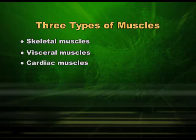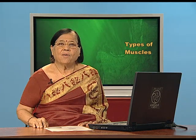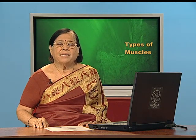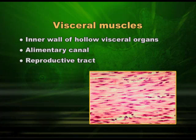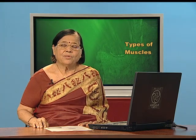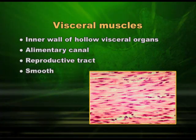The second category of muscles in our body is visceral muscles, which are found inside our body in hollow regions like our alimentary canal and our reproductive tract. These muscles are smooth in nature — that means visceral muscles are smooth. If you see them under a microscope, they are not striated, they are not striped, and that is why we call them unstriated or non-striated, and that is the reason why we call them smooth muscles.